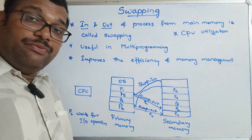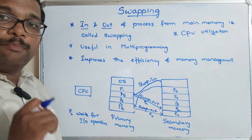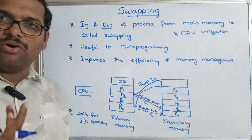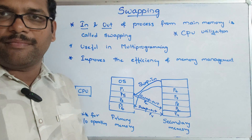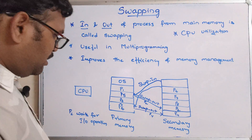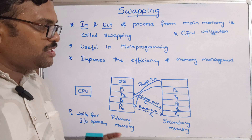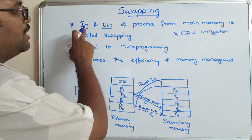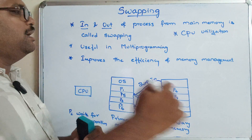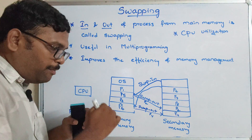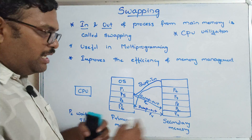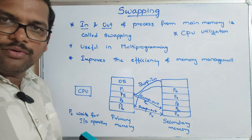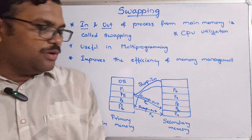Swapping is also useful when a process is larger in size than the RAM — large-size processes can also be executed in this way. So to summarize: swapping means the in and out movement of processes from main memory. The main idea is that moving a process in and out of main memory — between main memory and secondary memory — is called swapping.